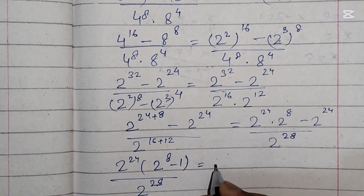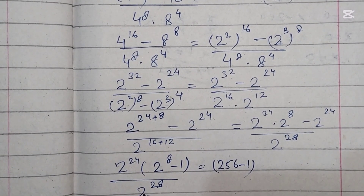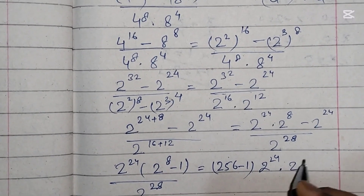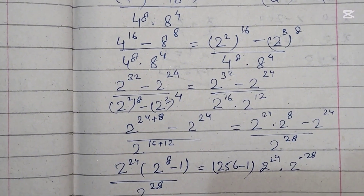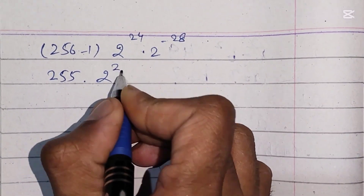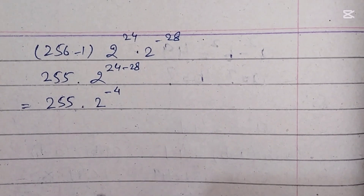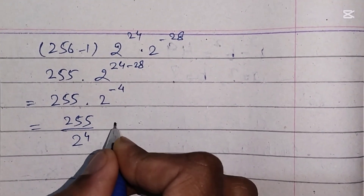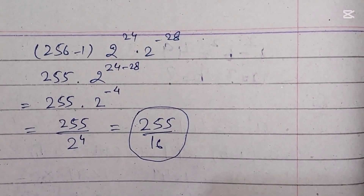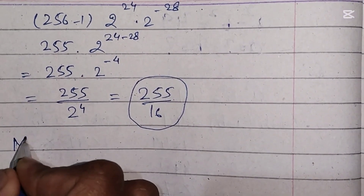Now, 2 power 8 is 256, so 2 power 8 minus 1 equals 255. Bringing 2 power 28 to the numerator and combining with 2 power 24, we get 255 times 2 power 24 minus 28, which is 2 power negative 4. So the result is 255 over 2 power 4, which equals 255 over 16. This is the final answer from method 1, obtained without a calculator.